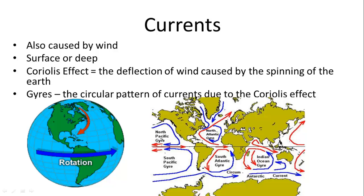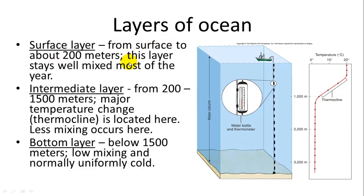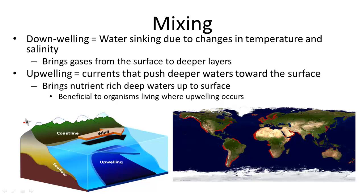Currents are also caused by wind and can be deep or surface. The Coriolis effect is the deflection of wind caused by Earth's spinning, and gyres are the circular current patterns resulting from it. The ocean has three layers: the surface layer (0–200 m), well-mixed year-round; the intermediate layer (200–1500 m), where the thermocline or major temperature change occurs; and the bottom layer below 1500 m. Downwelling occurs when water sinks due to temperature and salinity changes, carrying gases to deep layers. Upwelling brings nutrient-rich water up from the bottom, supporting abundant life.